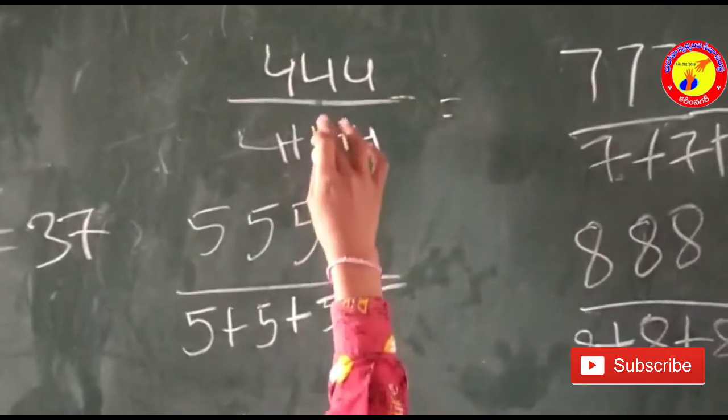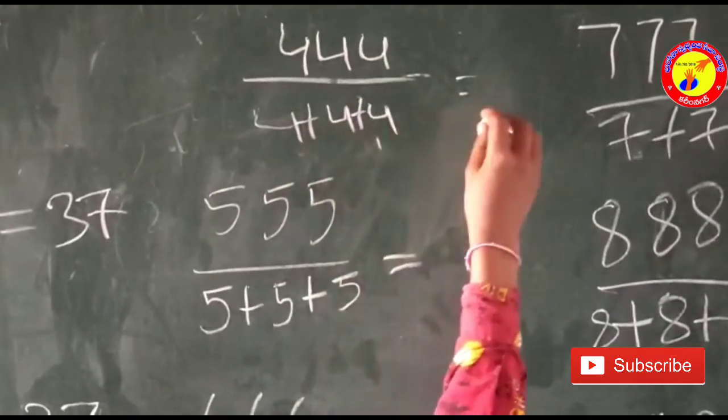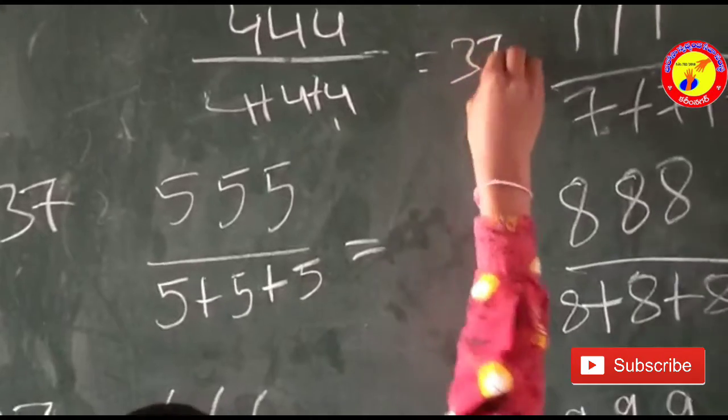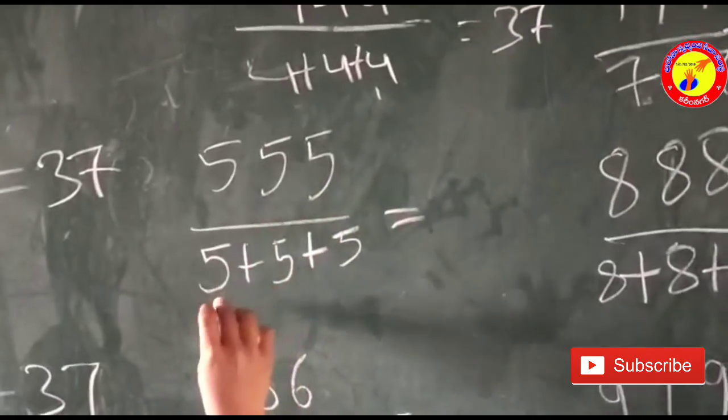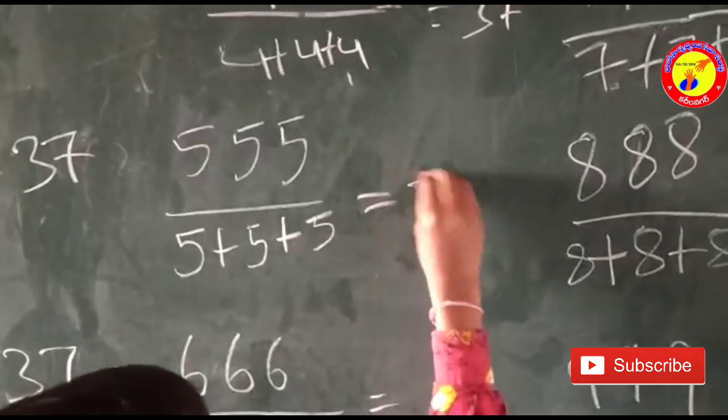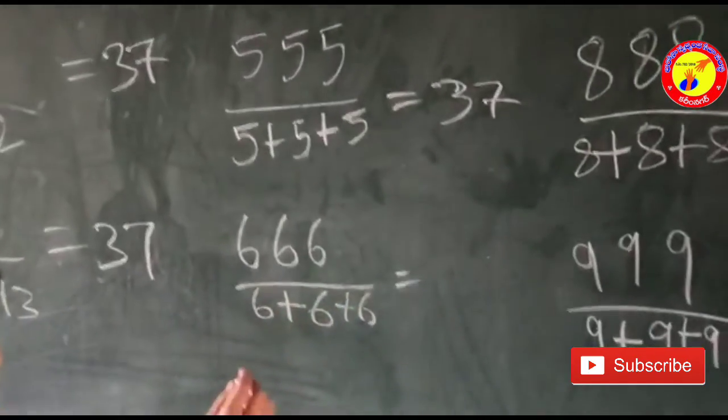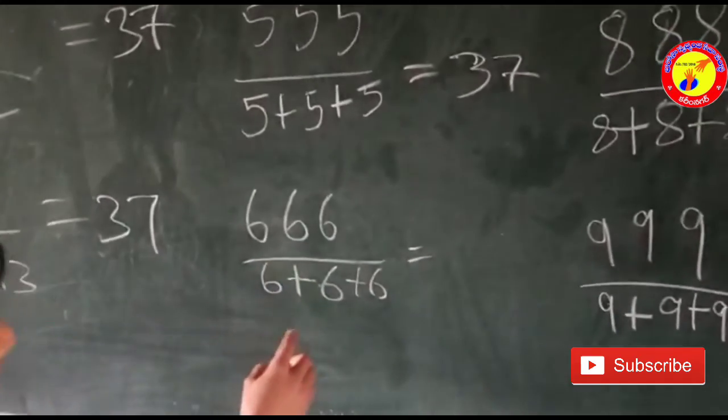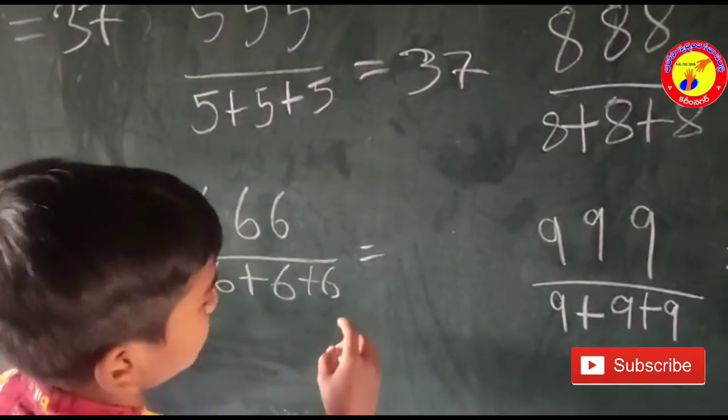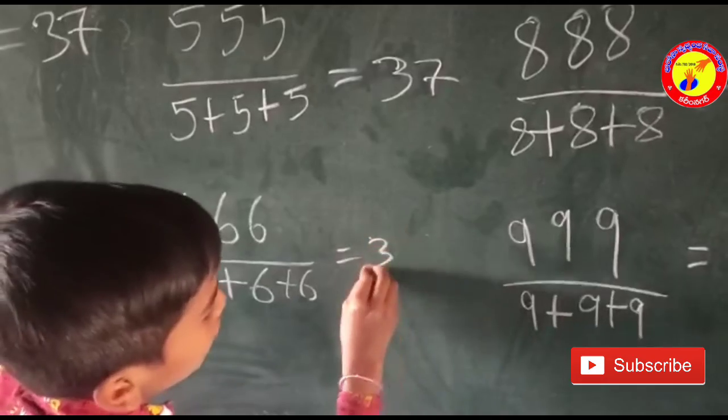444 divided by 4 plus 4 plus 4 is equal to 37. 555 divided by 5 plus 5 plus 5 is equal to 37. 666 divided by 6 plus 6 plus 6 is equal to 37.